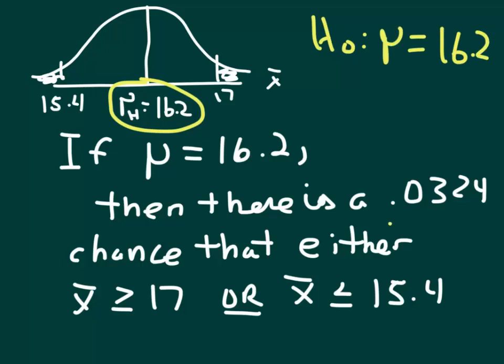That's the 0.0324, that we would get either a sample mean greater than or equal to 17, or a sample mean less than or equal to 15.4. In other words, we're just writing down in this statement what we already have drawn on this graph.